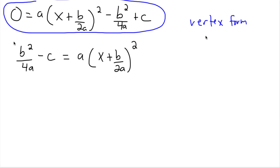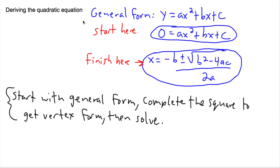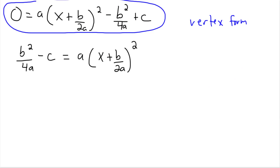We're in the middle of deriving the quadratic equation. We've been looking at how to start with the general form of a quadratic and finish with the quadratic formula, to show you where it came from. This is the last step where we were. We've been trying to solve it — we've got b squared over 4a minus c equals a times x plus b over 2a, all squared.